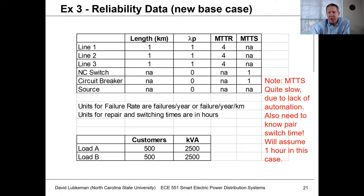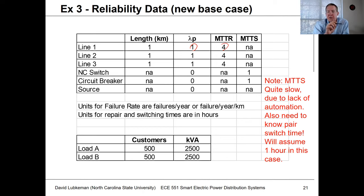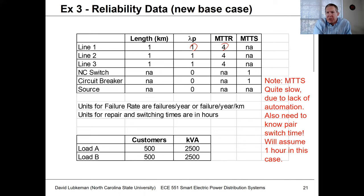For this new data set, I'm looking at permanent faults only — one fault per year per kilometer, taking four hours to repair — and I'll use those same statistics for each of the different line sections. There are no temporary faults shown in this case because for temporary faults, those are typically cleared and don't result in many SAIDI events. With switching operations, we're usually focused more on permanent faults, because when we have manual switches those will all involve sustained outages anyway.